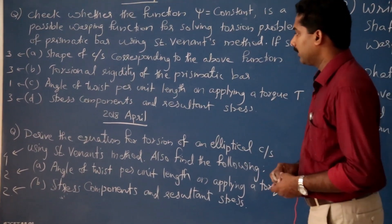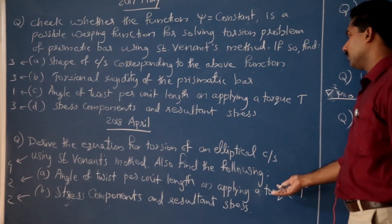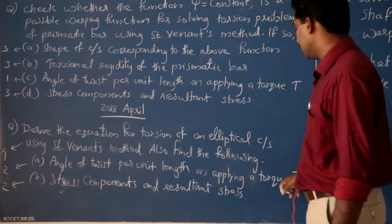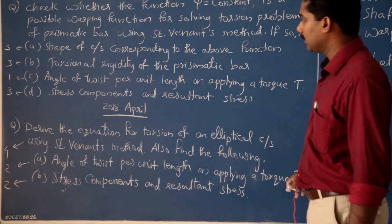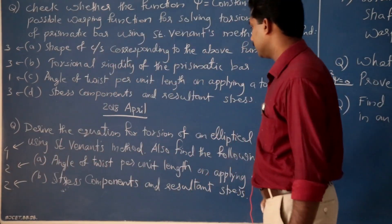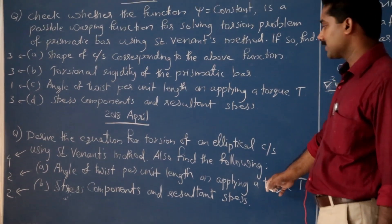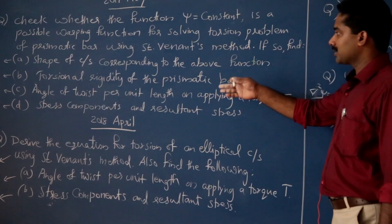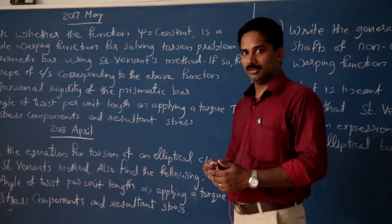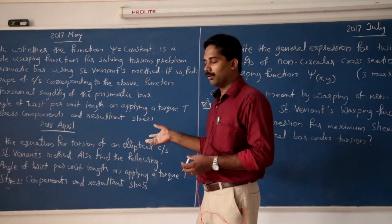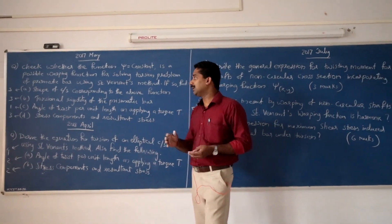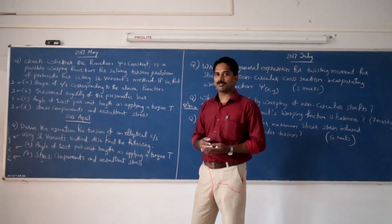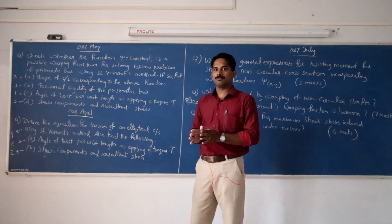From 2018 April: Derive the equation for torsion of an elliptical cross section using Saint-Venant's method — 4 marks. Also find: angle of twist per unit length on applying torque T for elliptical section — 2 marks. Stress components and resultant stress τ = √(τ_xy² + τ_xz²) — 3 marks. This is the 8-mark question from the second part of the 5th module. Thank you.